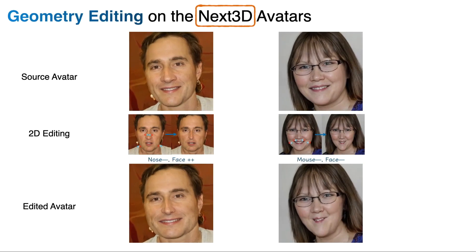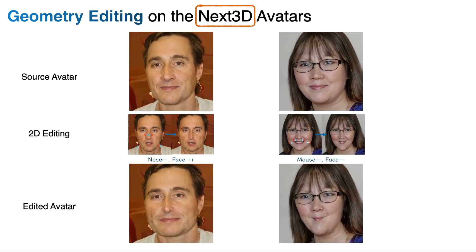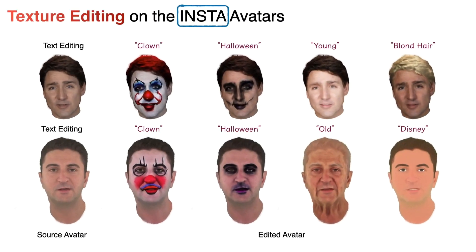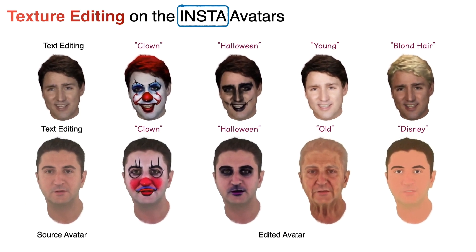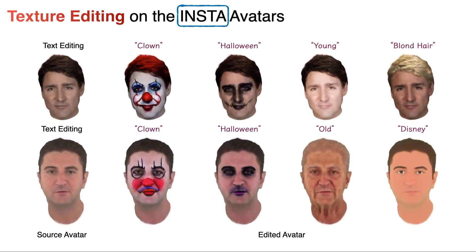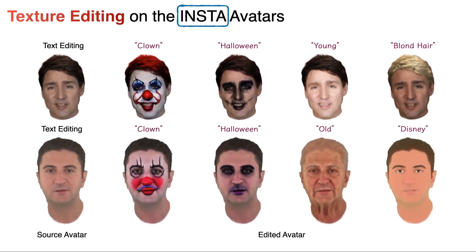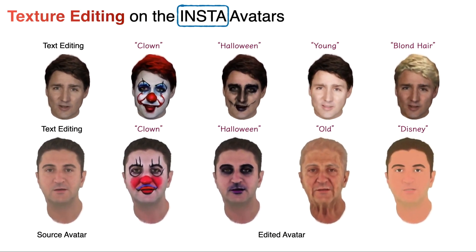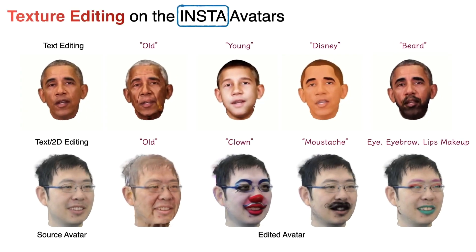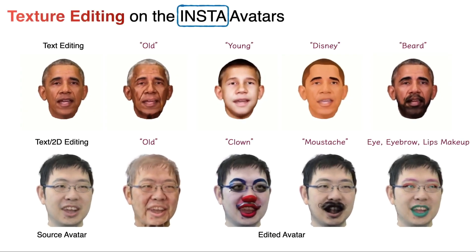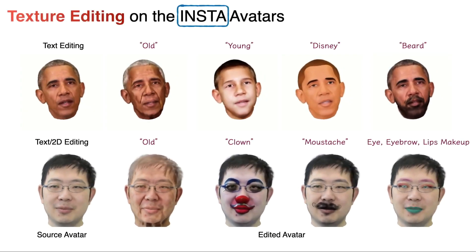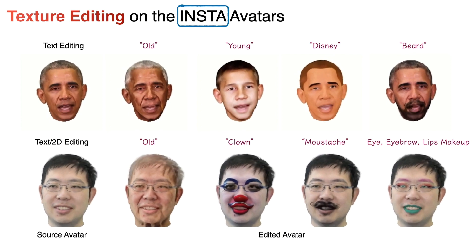Here we show the results on the Next3D avatars. Now we show examples of texture editing. Our method can edit the 3D avatar with a text prompt. We show more results of text-driven texture editing — we can make a person become old or young.